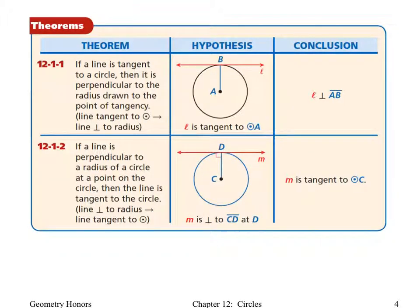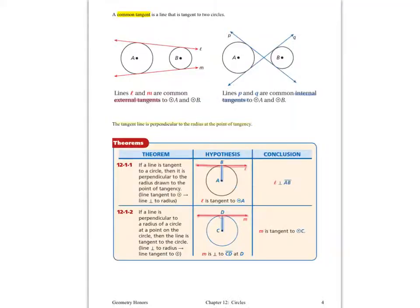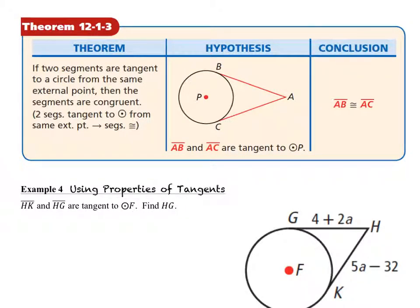Theorem 12-1-1 says if a line is tangent to a circle, then it is perpendicular to the radius at the point of tangency. Theorem 12-1-2 is kind of the converse of that one because it says if a line is perpendicular to the radius of a circle at the point on the circle, then the line is a tangent to the circle. Theorem 12-1-3 says if two segments are tangent to a circle at the same external point, and in this case we have point A, then the segments are congruent. This is going to allow us to solve some problems that we will see in example 4.